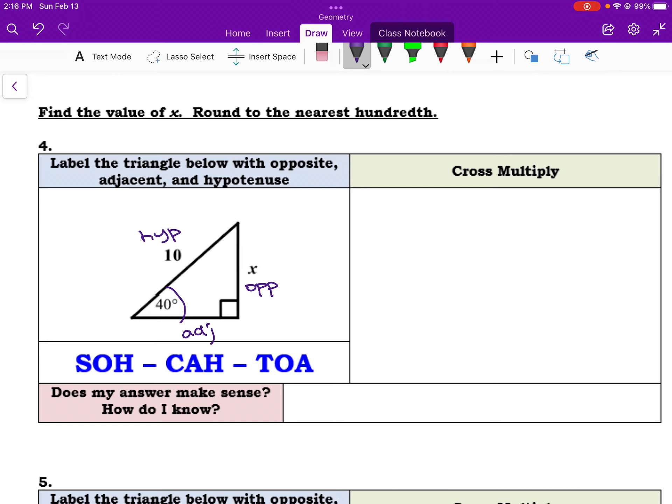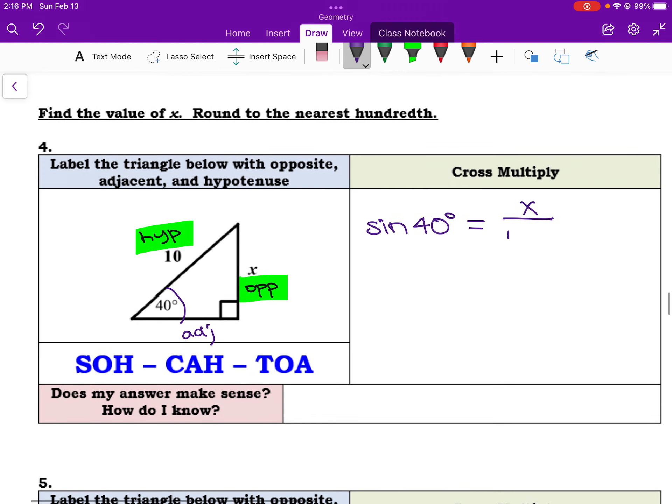Now we know that if we are looking to find x and 40 degrees, you might be tempted to try and solve for the missing side with Pythagorean theorem, but we only have one side that's known, so we're at a standstill there. But we can build an equation to solve. So we know that with respect to the 40 degree angle, we have the opposite and the hypotenuse. That's calling out the sine ratio. So if I go ahead and say that the sine of 40 degrees equals the opposite, which is x, over 10, which is the hypotenuse, now I've built an equation where I can solve for x.